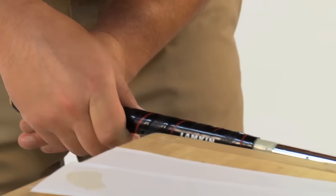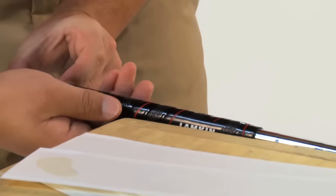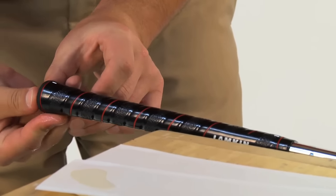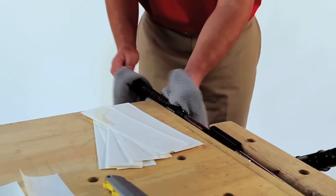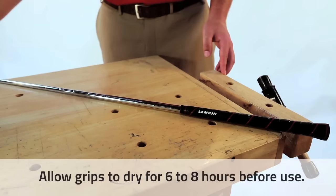Slide your new grip over the wet tape and shaft, ensuring the logo is properly aligned on the club. Once aligned, wipe down your new grip to remove all fluid.